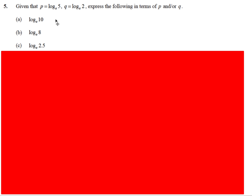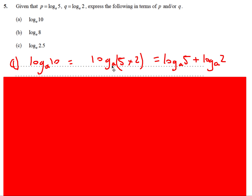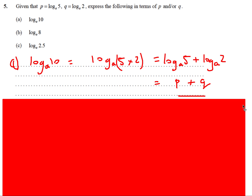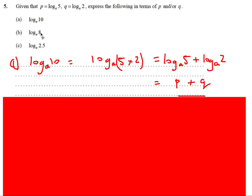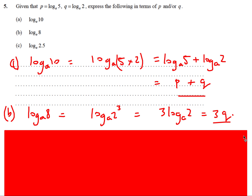Next question: given p = log_a 5 and q = log_a 2, express log_a 10 and log_a 8 in terms of p and q. For log_a 10: since 10 = 5 × 2, it splits as log_a 5 + log_a 2 = p + q. For log_a 8: since 8 = 2³, bring the power down to get 3 log_a 2 = 3q.